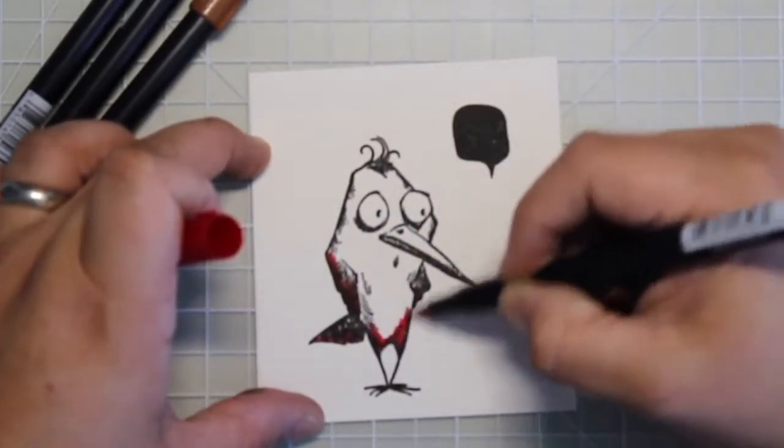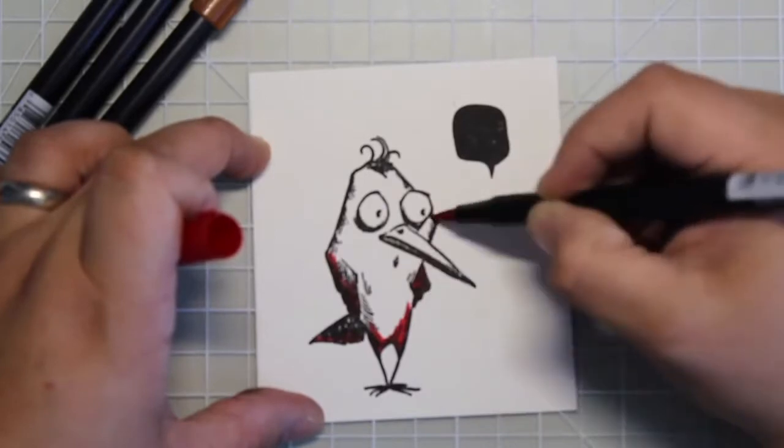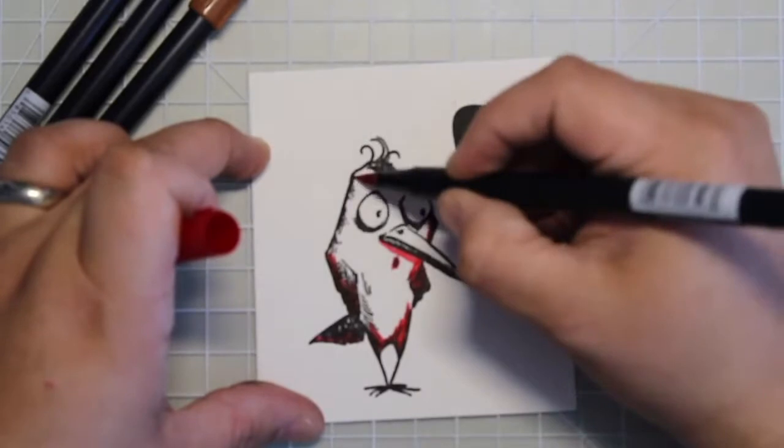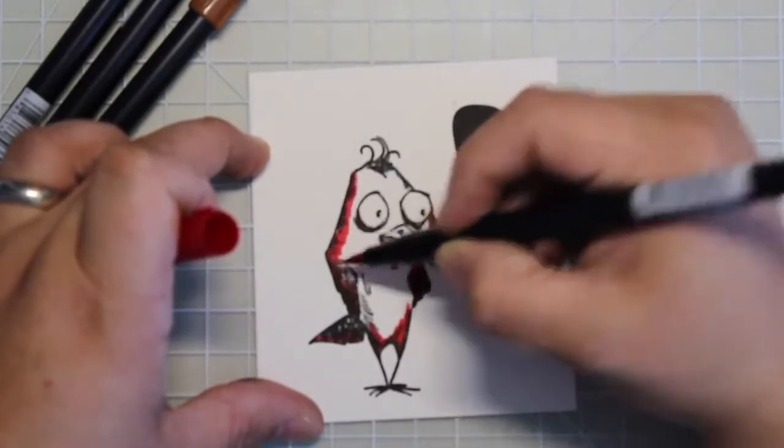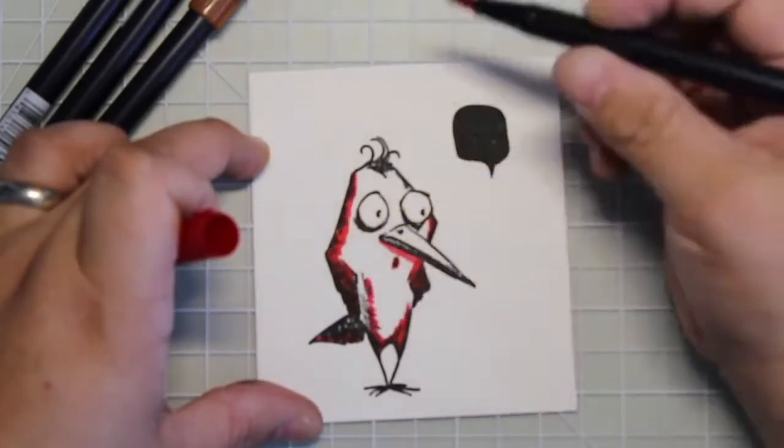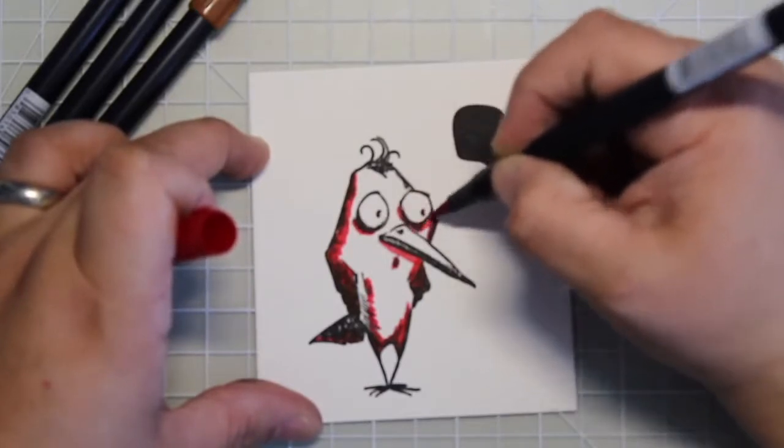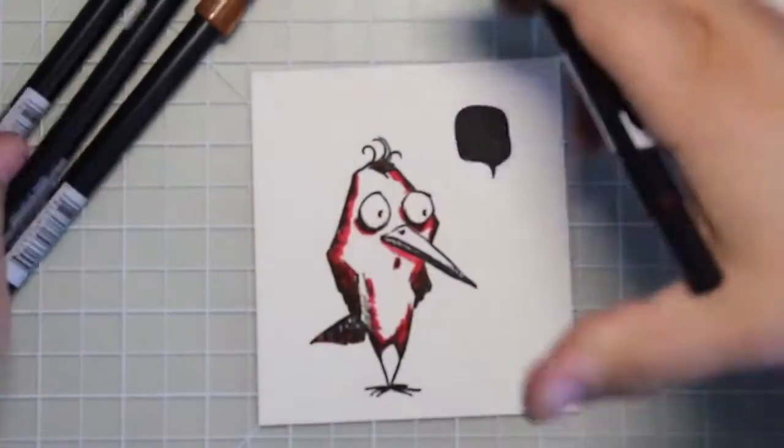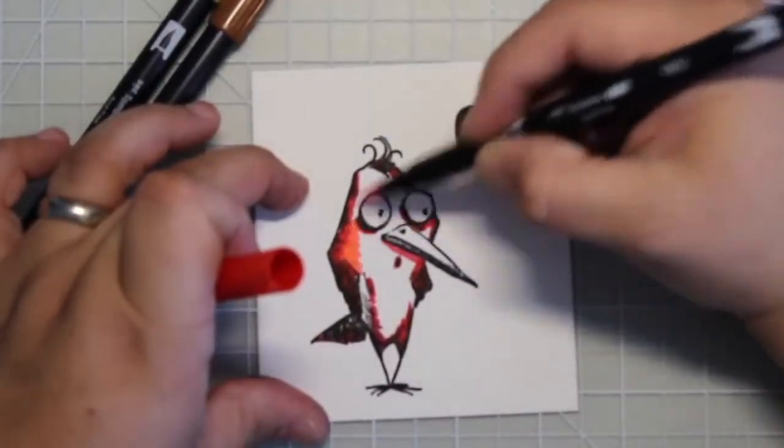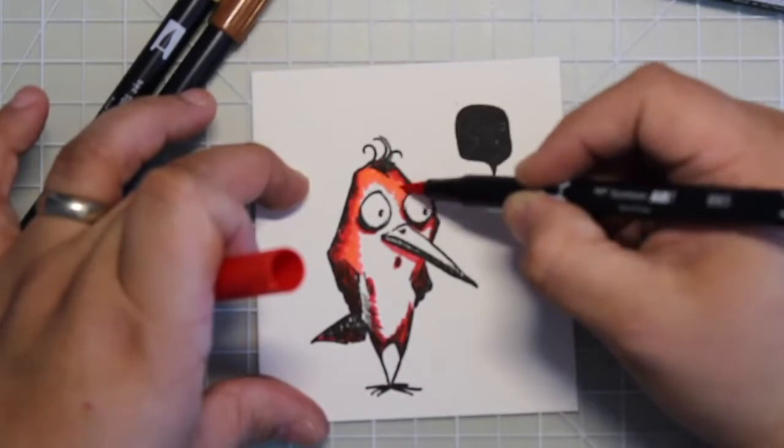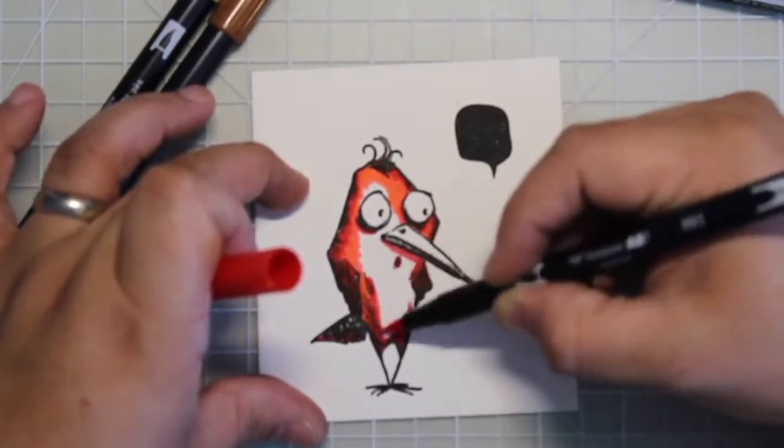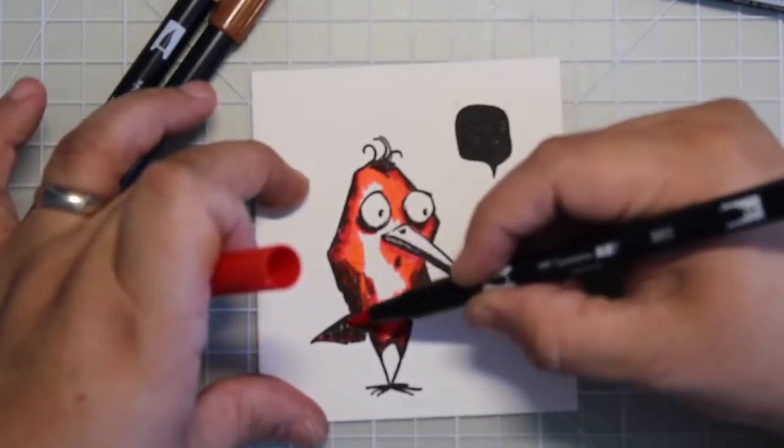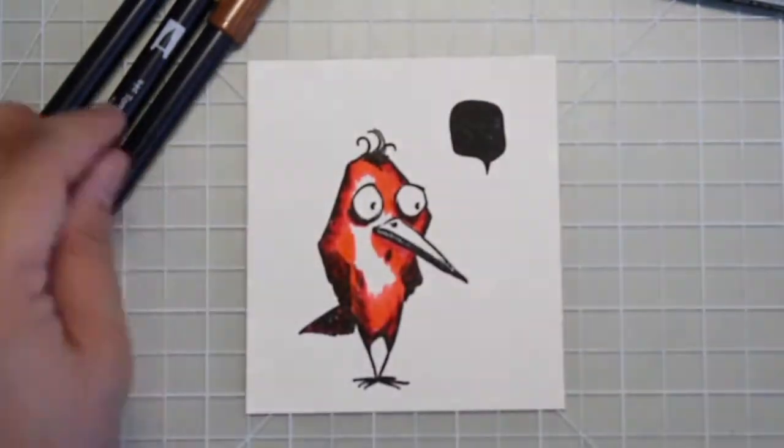So instead of using watercolor paints I'm gonna use some Tombow markers. I did note the numbers so they'll be in the description below. I decided a red bird is always good. You can do this with any markers it doesn't have to be these markers. You can have some Crayola markers and the same thing is gonna work. All you gotta do is color it in and then use a wet paintbrush and move the ink around because you're making it run on your terms.